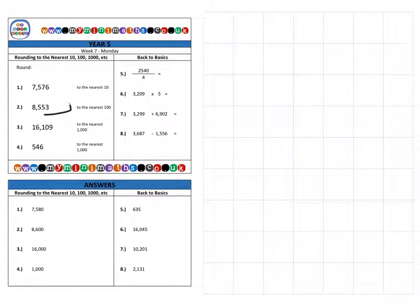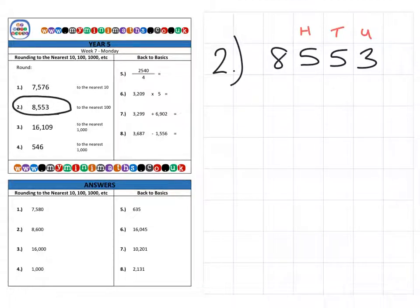And next, we're on to question two. Now, question two is 8,553. And we're going to be rounding it to the nearest 100. So again, we need to look at the different columns. We have our units, our tens, our hundreds and our thousands.